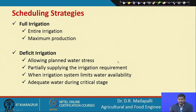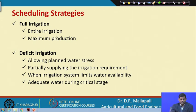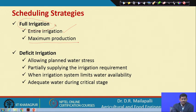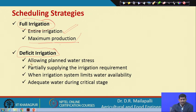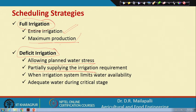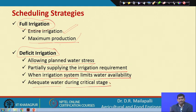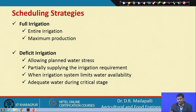Scheduling strategies are basically two: full irrigation, where you fill up to field capacity to maximize production; and deficit irrigation, which allows plant water stress by partially supplying the irrigation requirement — useful when the irrigation system limits water availability but ensures adequate water during critical crop stages.